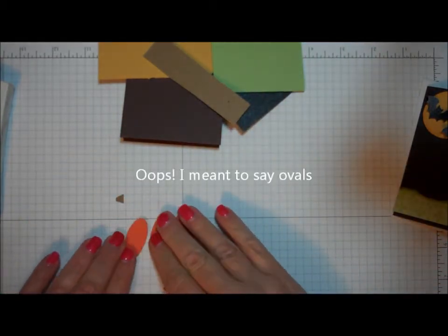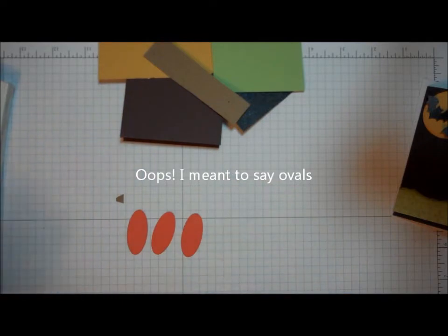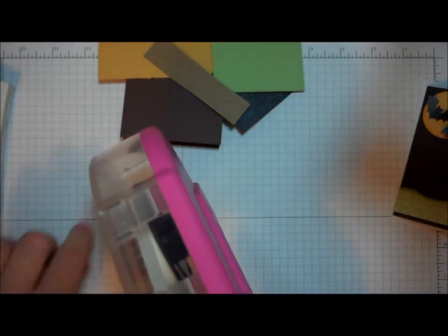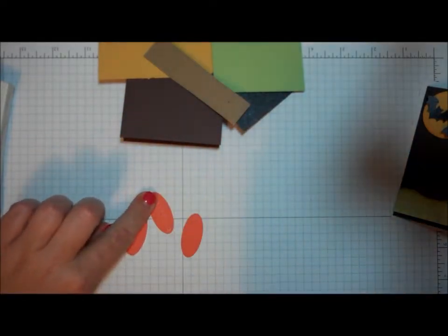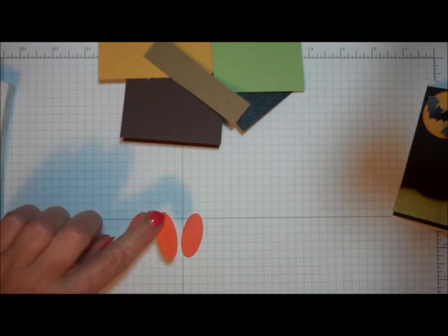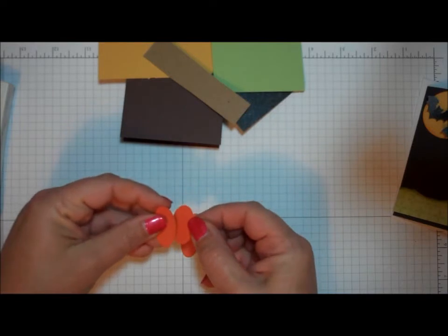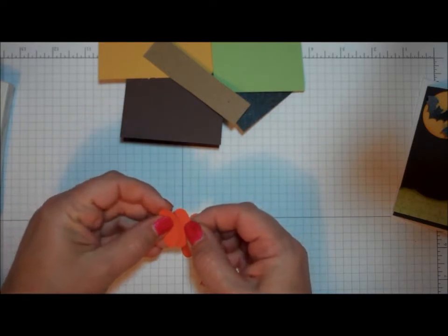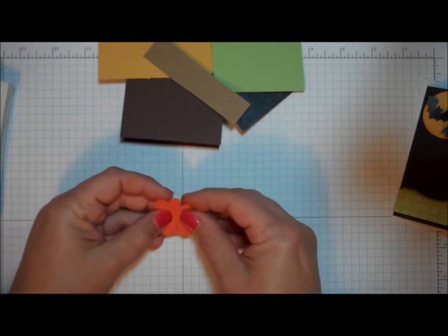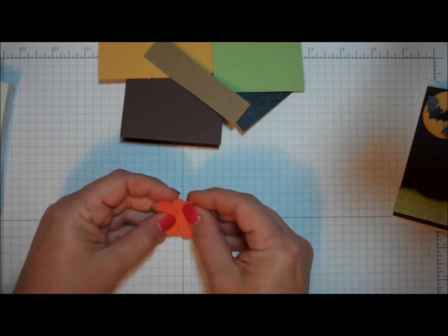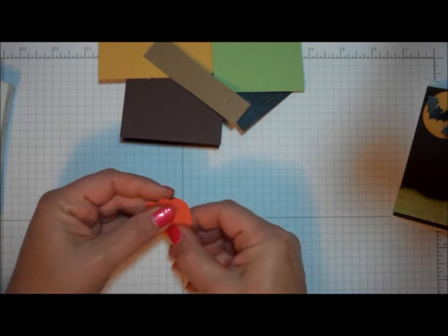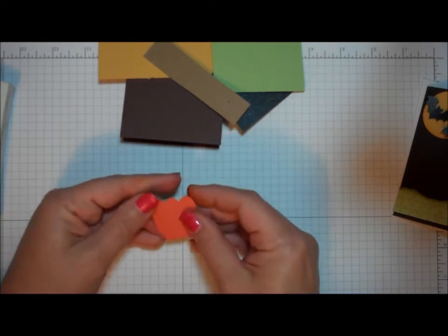And I'm going to take those circles and I'm going to apply adhesive to one of them. And then what I'm going to do is I'm going to take my other ovals and I'm going to layer them on top, kind of angling them a little bit so that my pumpkin shape is actually slightly wider at the top than at the bottom. Turn it over.